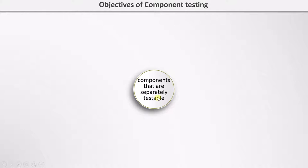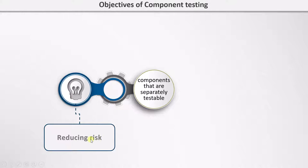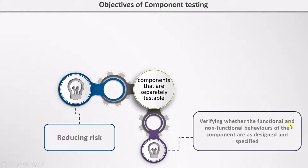Now let's find out its objectives. The first objective is to reduce the risk — reducing the risk of software failure during operational use. The second objective is verifying whether the functional and non-functional behaviors of the components are as designed and specified. Two of the important factors of component testing are the design documents and the code. You have to compare the two to check if the code is implemented the way it was designed to.